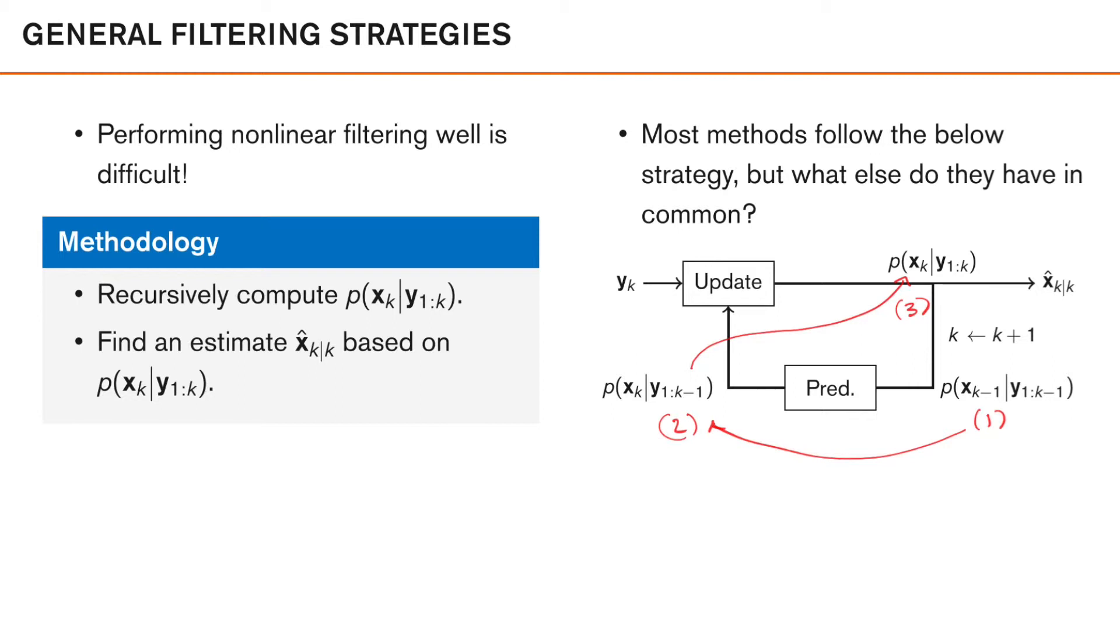Note that a prerequisite for us to be able to have this recursive filtering scheme is that our updated posterior density is the same type as the prior that we started with. If this isn't the case, we can't simply exchange what we call the posterior and prior and then start all over, because how we describe our densities have now changed. In nonlinear filtering, the true posterior will generally not be of the same type as the prior.